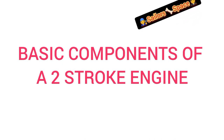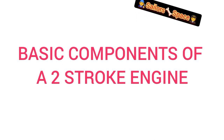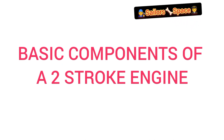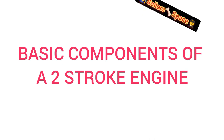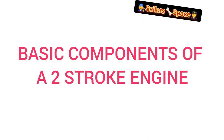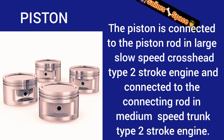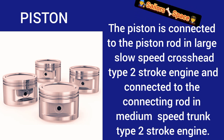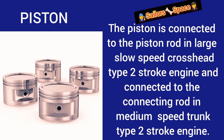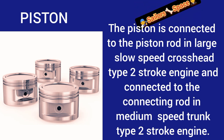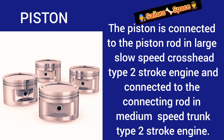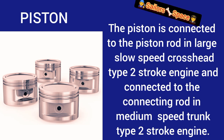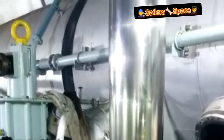Let's go into the first part of our discussion today: the basic components of two-stroke engines. We have the piston, which is a very important component. In large slow-speed two-stroke engines it is connected to the piston rod, and in medium-speed trunk-type engines the piston is connected directly to the crankshaft.